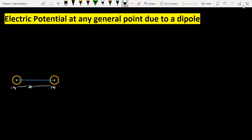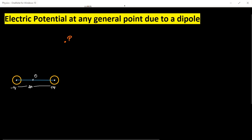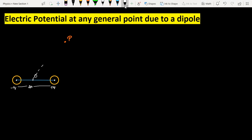I consider the center of this dipole — the origin — at the midpoint of this separation distance, which is O. Next, I am going to consider a point P anywhere on this plane or sphere. This point P is at distance r from the origin, that is, r distance from the center of this dipole. The distance from the negative q charge to point P is r1, and the distance from the positive q charge to point P is r2.